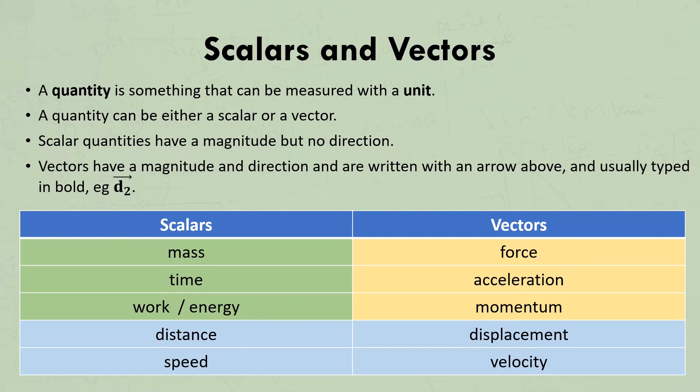Displacement and distance are both measurements of the quantity length. But distance is a scalar and displacement is a vector, so displacement needs a direction. And speed is a scalar and velocity is its vector equivalent. Let's take a look at these in more detail.